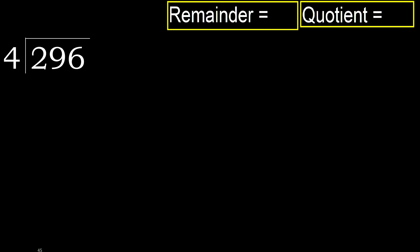296 divided by 4. 2 is less than 4, therefore we look at the next digit. 29 is not less than 4, therefore we work with 29.